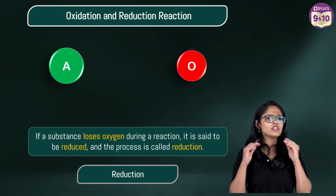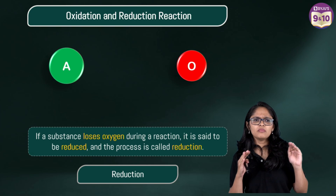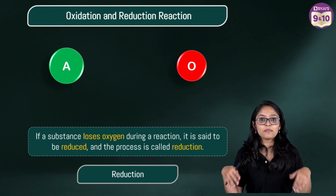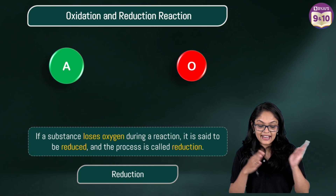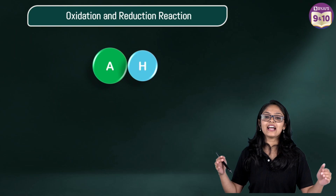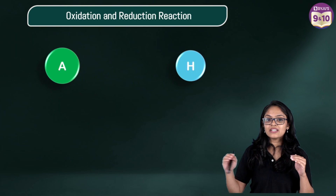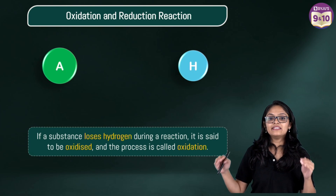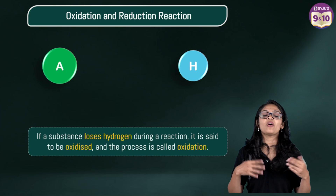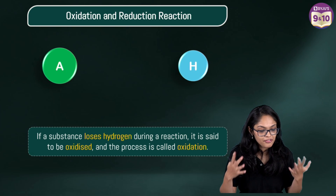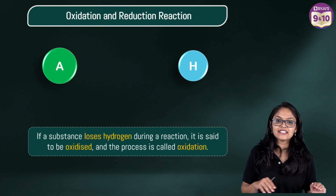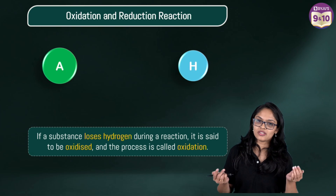Now, is this the only way to get oxidized and reduced? No. There is another way also. If a substance loses a hydrogen atom, then that scenario is also called oxidation. If a substance loses hydrogen during a reaction, it is said to be oxidized and the process is called oxidation.